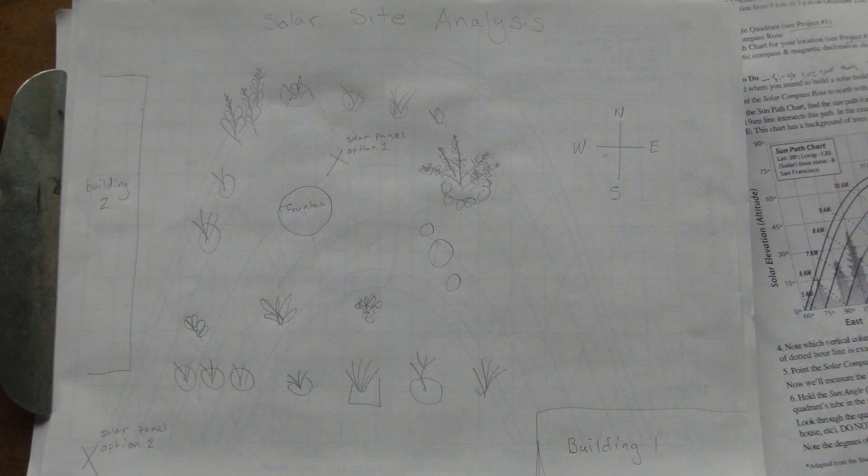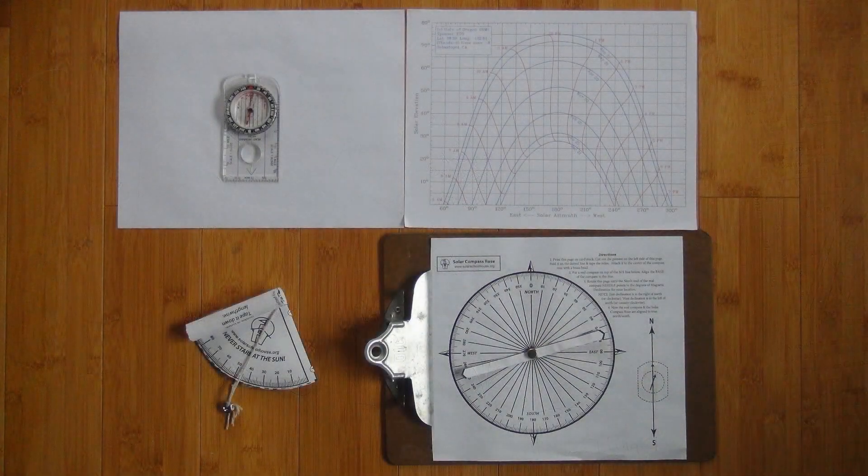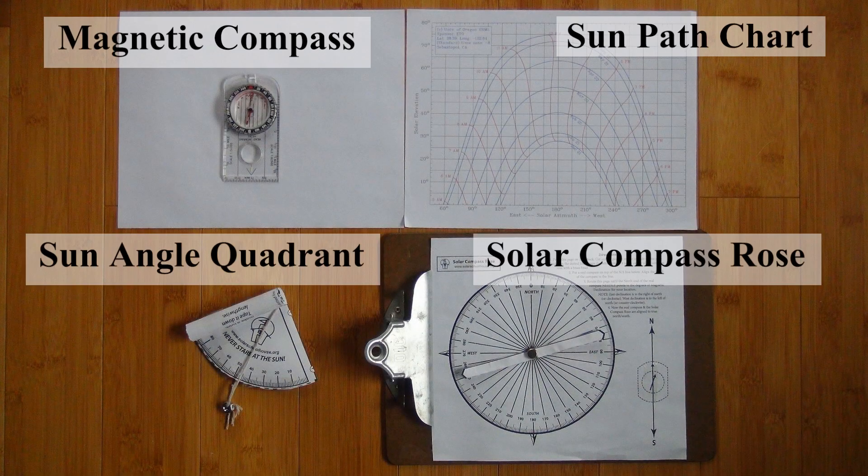In this activity, you will learn how to conduct a solar site analysis using simple tools such as a compass, a sun angle quadrant, a solar compass rose, and a sun path chart.